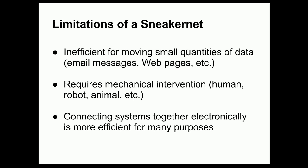For example, if you want to look up a web page about a product, it's far more effective to simply go to the store and look at the product in person than to wait for somebody to mail you a flash drive containing a page about that product. In addition, a sneaker net requires mechanical intervention — in the form of a human, robot, or even a trained animal like a carrier pigeon — to carry data from one place to another. Such mechanical intervention is much more prone to breaking down than electronic communication systems.